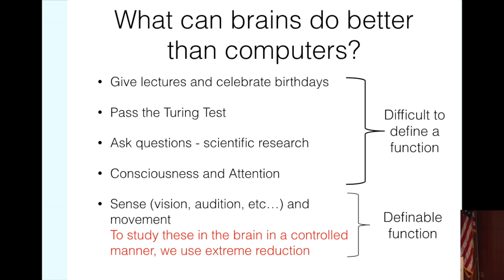There's a few examples. They can give lectures and celebrate birthdays. They can pass Turing tests. They can ask questions and conduct scientific research, and to that end design and build computers. And there are these notions of consciousness and attention attributed to the brain. The common thing about these examples is it's hard to define a function. When we do neuroscience, some people are attempting to approach this, but leave consciousness and attention aside.